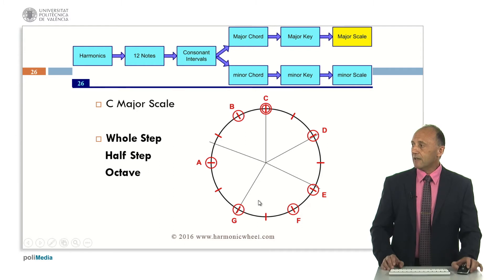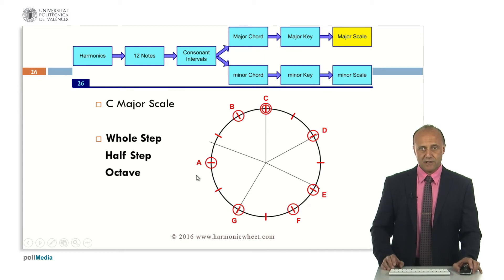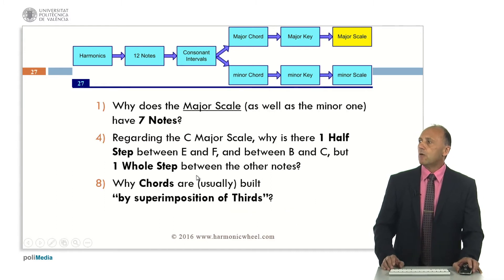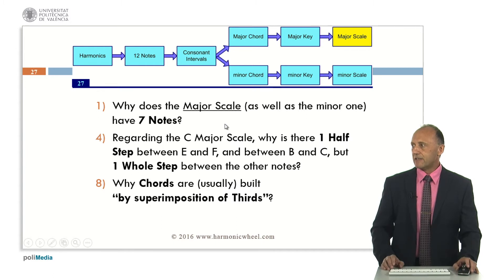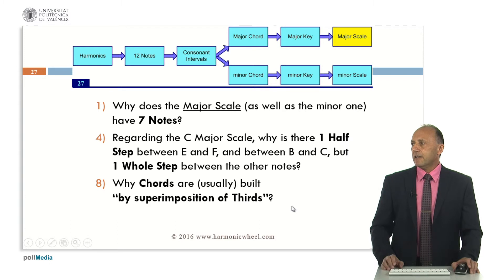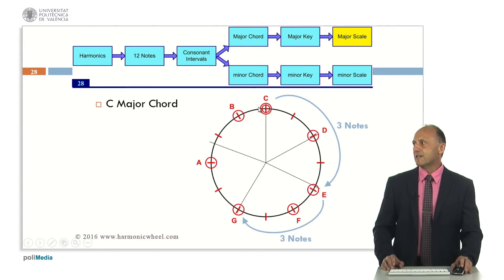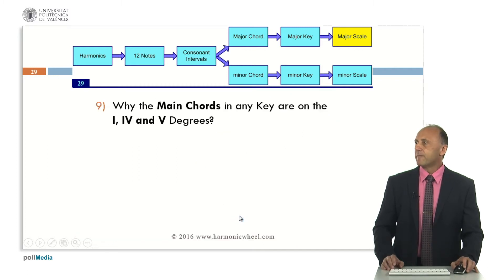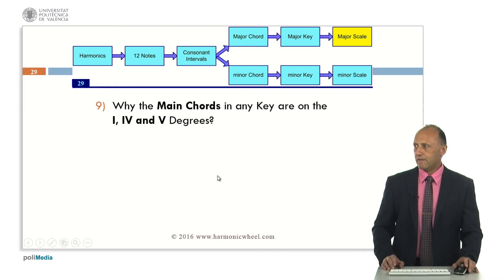If we start with note C and play the scale until the next C, this last note is the eighth note in this series. Then the concept of octave, which is a Latin word for eighth. Now we obtain seven notes for the major scale and we also obtain the particular sequence of whole and half steps in a major scale. Now we can also verify that chords are actually built by superimposition of thirds — from C to E is a third and from E to G is another third. We can also verify that the main chords in any key are on the first, fourth and fifth degrees.